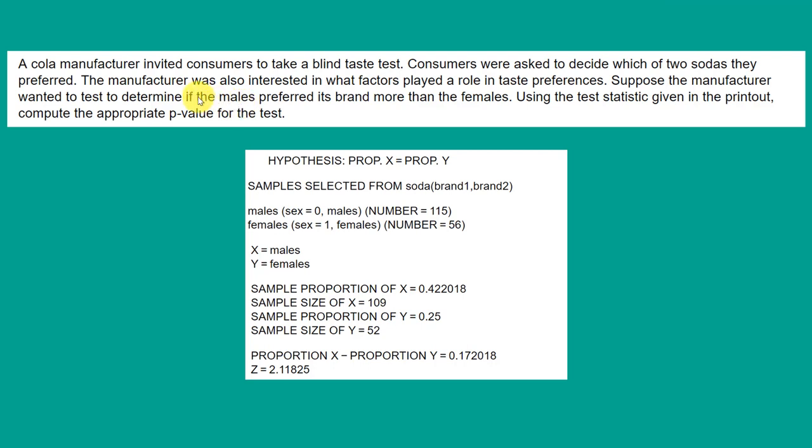Since we want to know if males prefer something more than females, that's a hint that this is categorical data. If we have categorical data, then we will run a Z test for proportions.